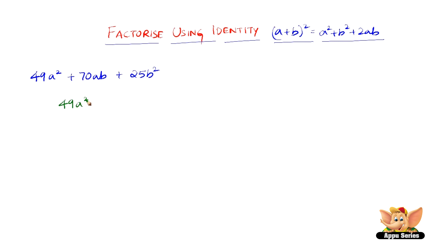49a square can be written as 7a the whole square and 25b square can be written as 5b the whole square, and as a result of it we can write 70ab as 2 into 7a into 5b.